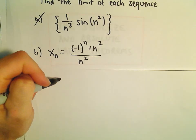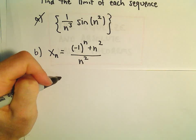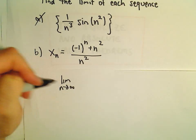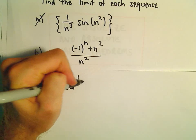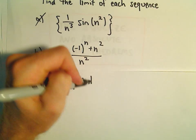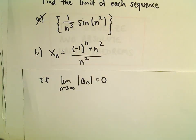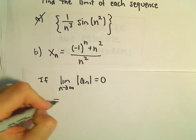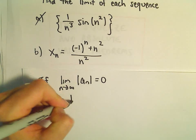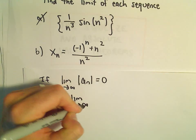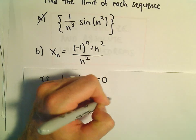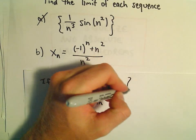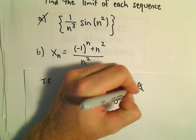To justify this, we're going to use the absolute value theorem. Remember, that says if the limit of the absolute value of x sub n equals 0, that tells us that the sequence without the absolute value also equals 0. So we're going to use this result.